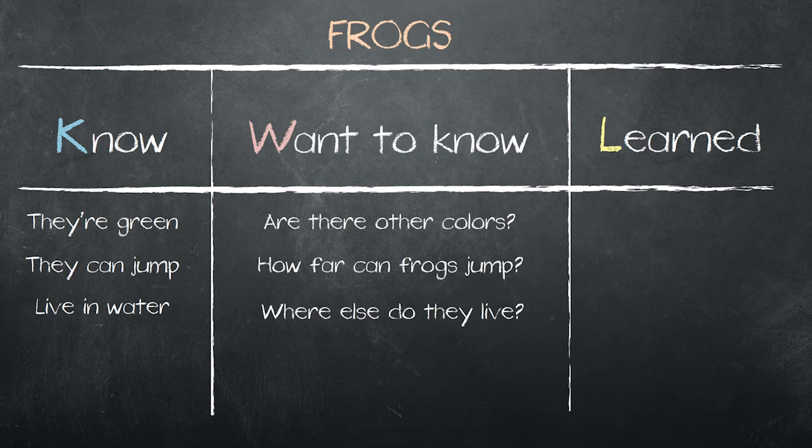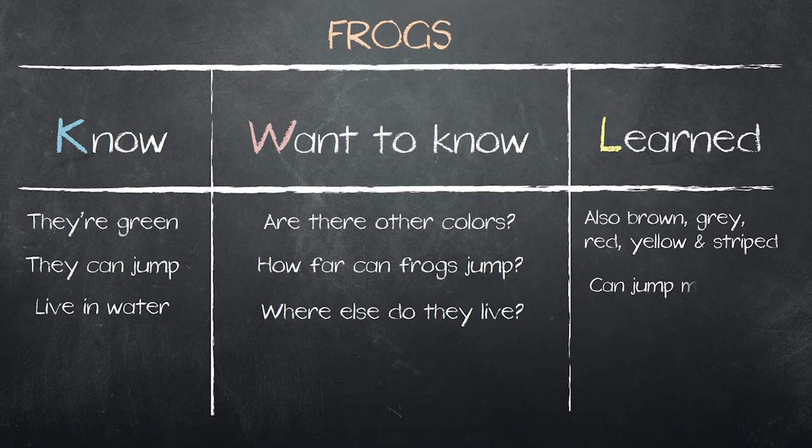The third column is done at the end of the lesson. We ask the students what they have learned, and they make a list in the right column. They can also be brown, gray, red, yellow, and striped. Frogs can jump more than 20 times their body length. Most live near water but not in it.